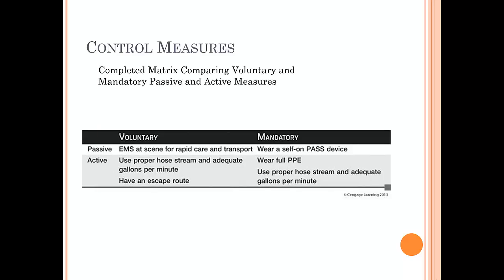Control measures include voluntary, passive, and mandatory types. Passive means EMS at the scene for rapid care and transport — good practice though not required. Active means using proper hose streams, adequate gallons per minute, and having an escape route. Mandatory measures include policies requiring all employees to wear a PASS device — this should not be a choice — and wearing full personal protective equipment, which should also have a policy. If it's not done, actions need to be taken.